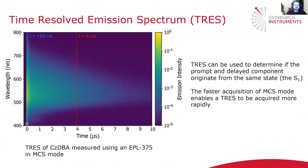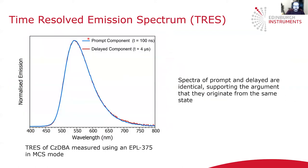If we take a slice of this decay at 100 nanoseconds, we can look at the prompt fluorescence, and at 4 microseconds to look at the delayed fluorescence. Comparing these slices, we can see that they give identical spectra. This confirms that we are looking at prompt and delayed fluorescence, showing that both the microsecond and the nanosecond component originate from the same excited state because they have the same spectral shape.